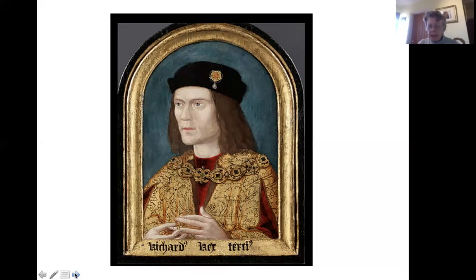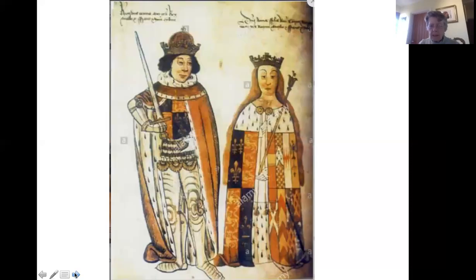First of all, here is Richard III. This is a 16th century copy of an earlier portrait, and I think it's with the Society of Antiquaries. Here is Richard leering rather at his wife Anne Neville. Richard married Anne Neville sometime before 1474, and this is relevant because of the age at which Edward is supposed to have died.